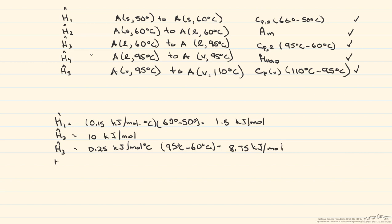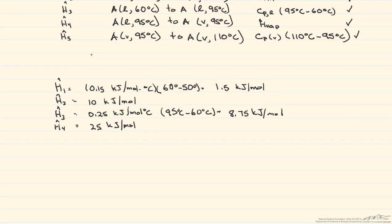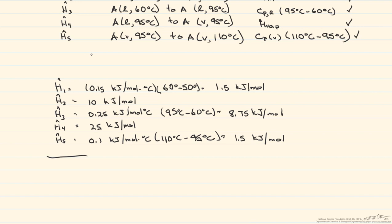H4 is the heat of vaporization — we look it up — and that's equal to 25 kJ/mol. Finally, H5, the sensible heat of bringing the vapor from its boiling point to the final temperature, = 0.1 kJ/(mol·°C) × (110 – 95)°C = 1.5 kJ/mol. When we add up all of these enthalpies, our change in enthalpy for the entire process is 46.75 kJ/mol.